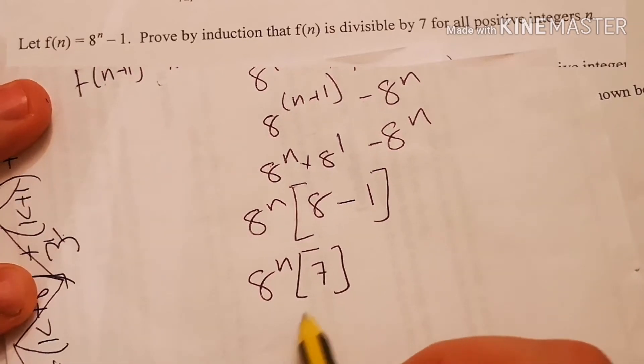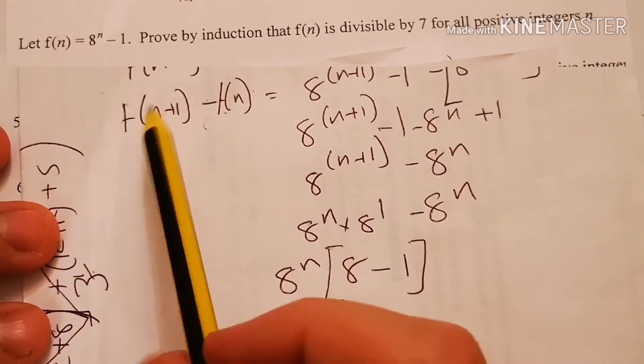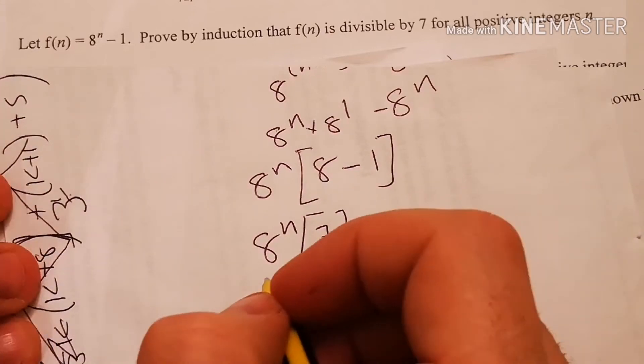OK, because that's a 7, anything times 7 is divisible by 7. I realize these should all be k's, but it shouldn't make a difference.